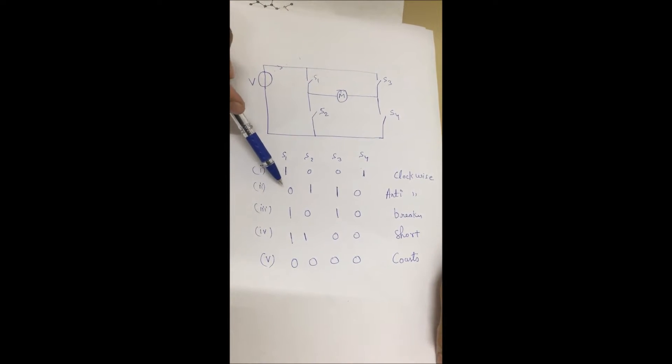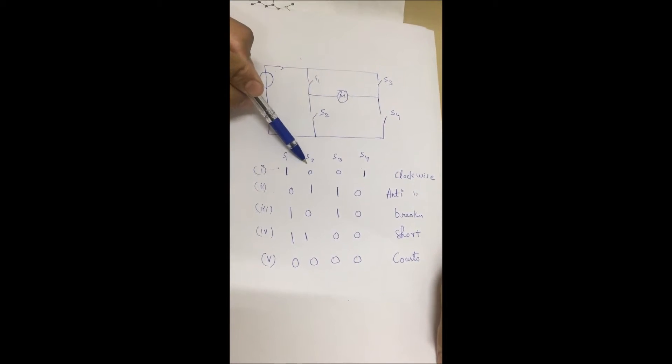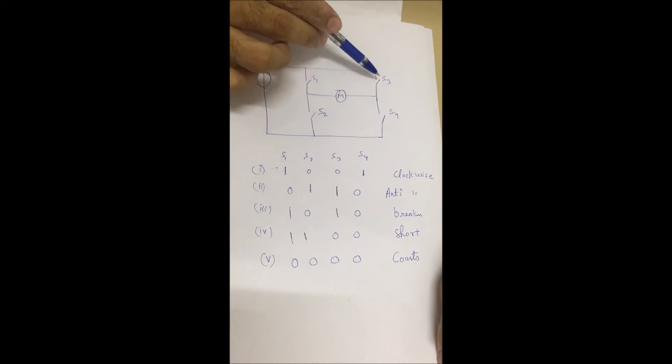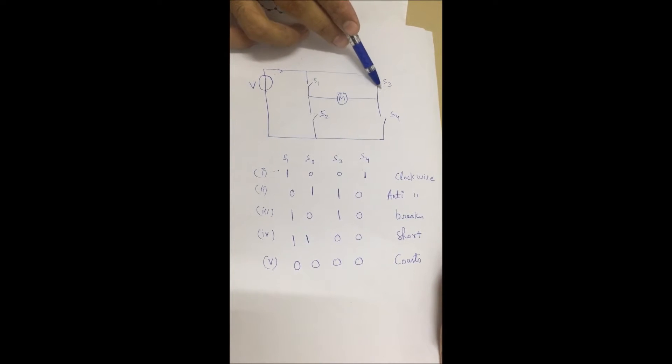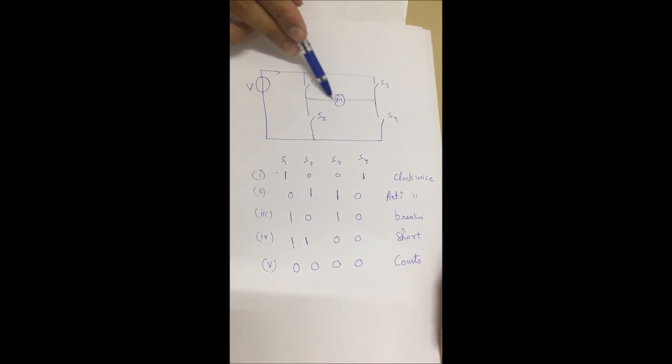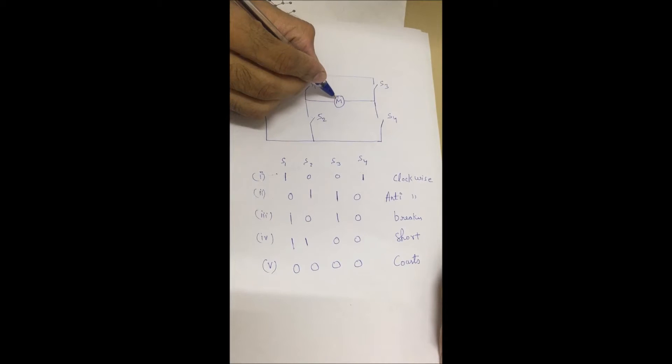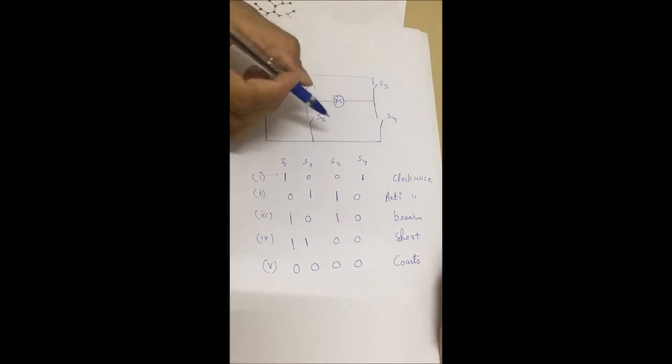The condition when switch 2nd and 3rd are closed. When this switch and this switch are closed, current takes this path. So motor starts moving in anti-clockwise direction.